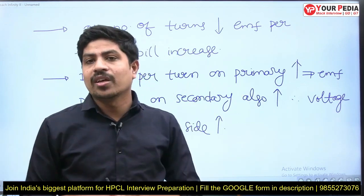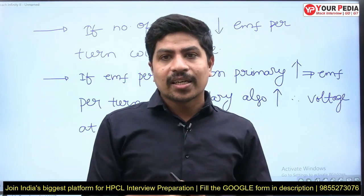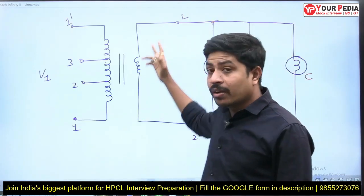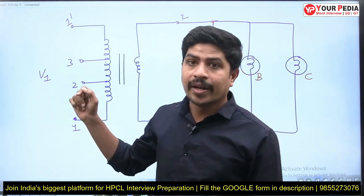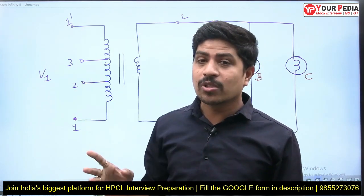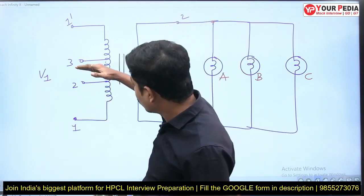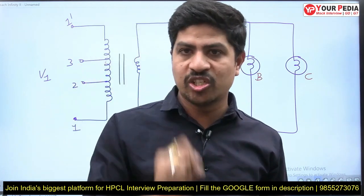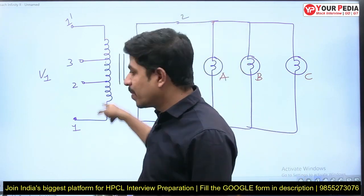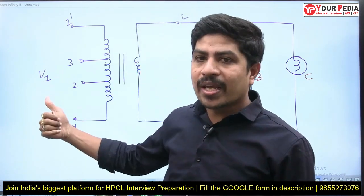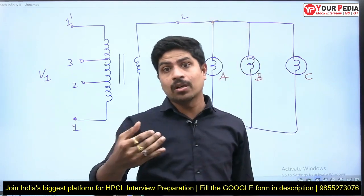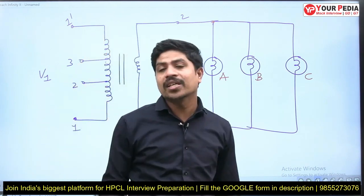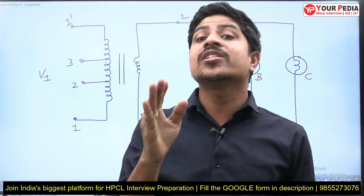There is also a vice versa case. If all loads are disconnected, there is a high voltage at the secondary — it may be 240V while the rated voltage is 220V, creating a risk of insulation damage. Then we must increase the number of turns on the primary using the on-load tap changer. As the primary turns increase, EMF per turn decreases on the primary, and on the secondary also, reducing the total secondary voltage back to a safe level. How is this on-load tap changing done without disconnecting the power supply?